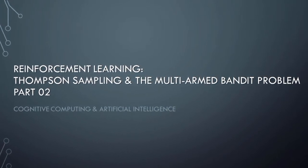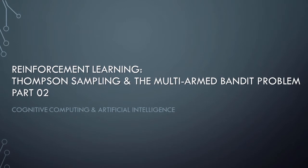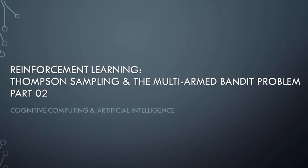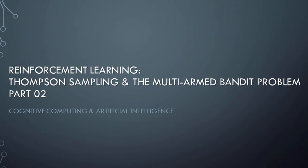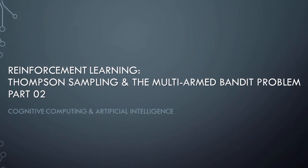This lesson focuses entirely on how to implement a reinforcement learning based AI system that uses Thompson sampling to solve a real multi-armed bandit problem. So let's switch over to Python and get started.